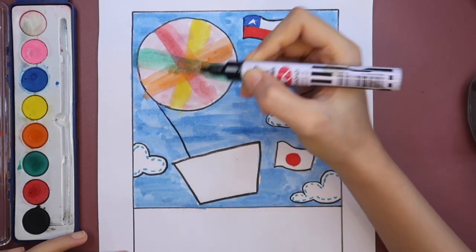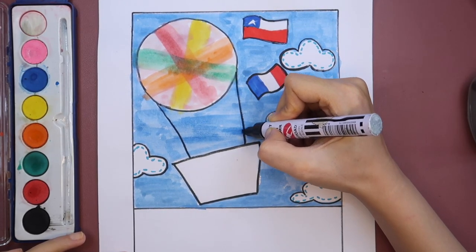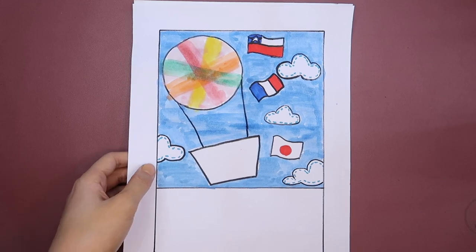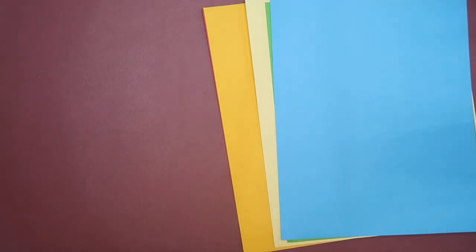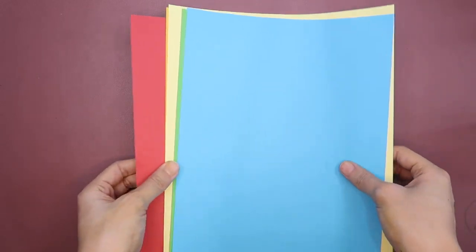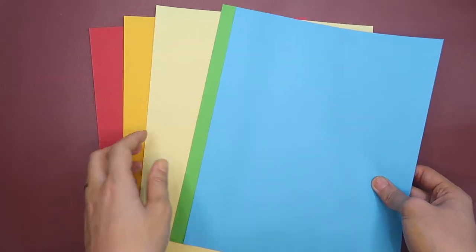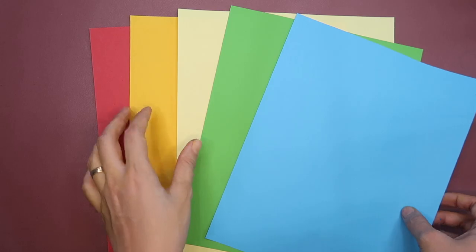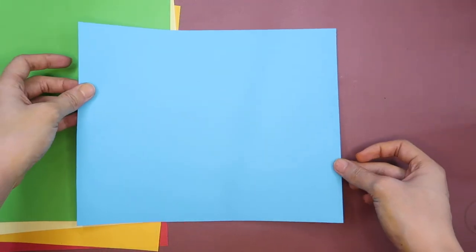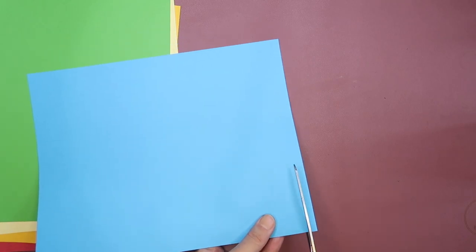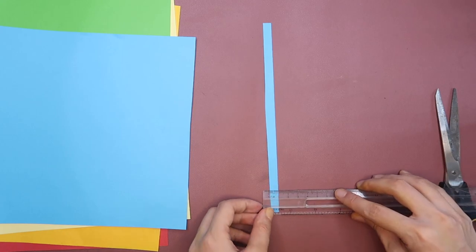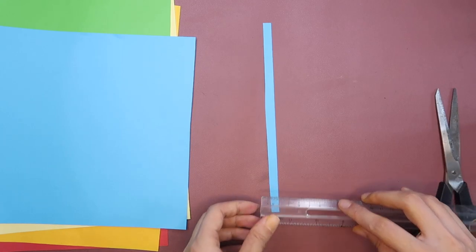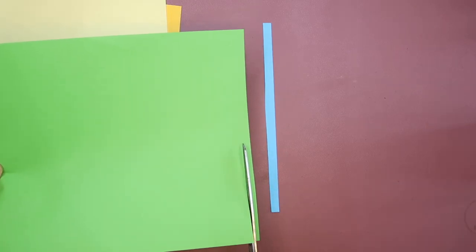Don't forget to trace the outlines with a marker. Now, let's make our artwork three-dimensional. You can use any color of construction paper for this. Place your paper in a landscape position and cut a thin strip in the shorter side of the paper. No need to measure it, but if you want to be precise, it's approximately 1 cm thick. You can use any color for the strips.